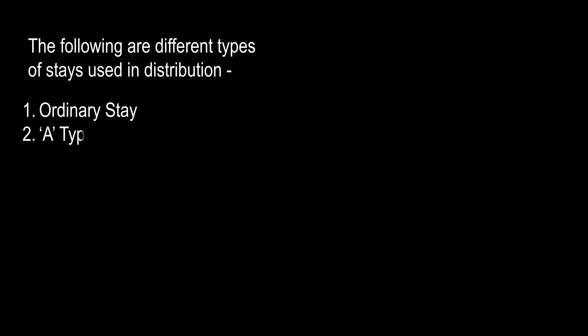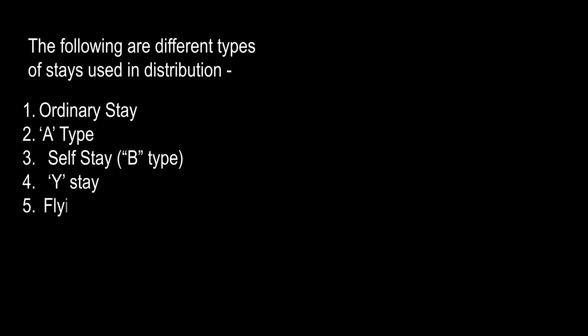The following are different types of stays used in distribution lines: Ordinary Stay, A-Type Stay, Self Stay, Orbi-Type Stay, Y-Type Stay, Flying Stay, Start Guy, and Storm Guy.